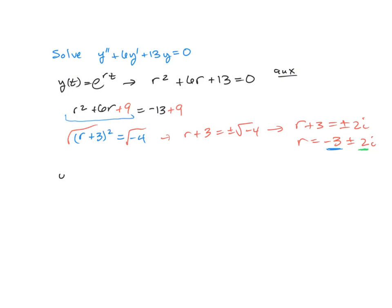So our solution is y(t) = c₁e^(-3t)cos(2t) + c₂e^(-3t)sin(2t). And this gives us our real solution for our real differential equation, and we just use the complex numbers to get to that solution.